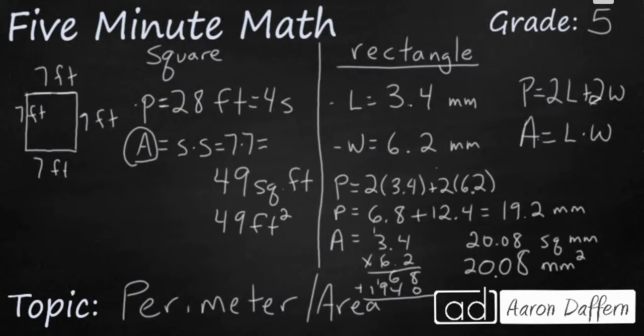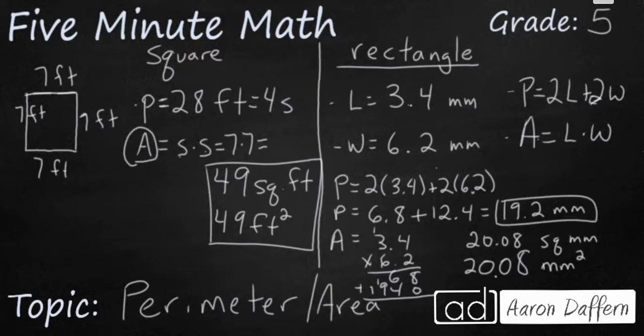With the given information from the first problem, we can figure out that each side was 7 feet. So multiplying side times side, you're going to get 49 square feet, which can be written in either of these two ways. For the second problem, we needed these two equations: P equals 2L plus 2W and A equals L times W. Our perimeter ended up being 19 and 2 tenths millimeters, and our area was 20 and eight hundredths square millimeters, written in either of these two ways.